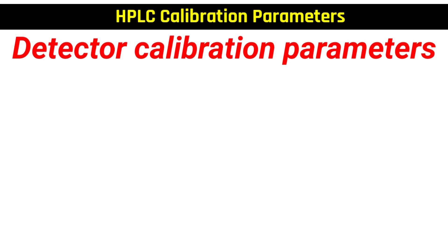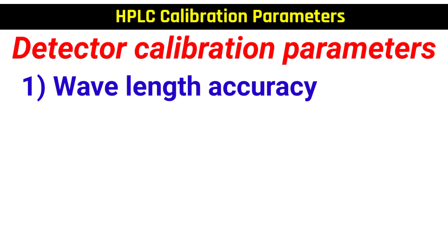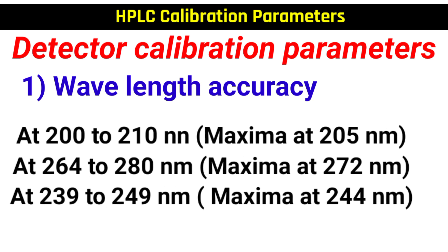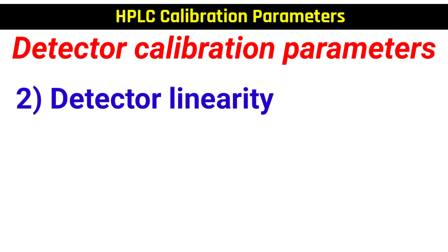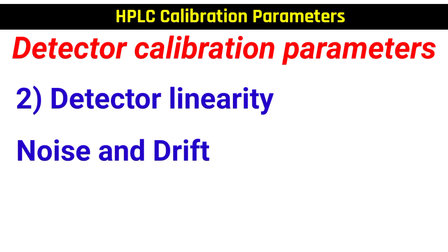Next is detector calibration parameters. It includes: number one, wavelength accuracy — check the maxima at 200 to 210 nanometers, at 264 to 280 nanometers, and at 239 to 249 nanometers. Number two is detector linearity. And number three is noise and drift.